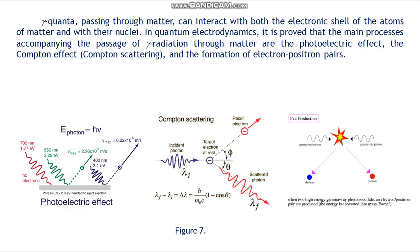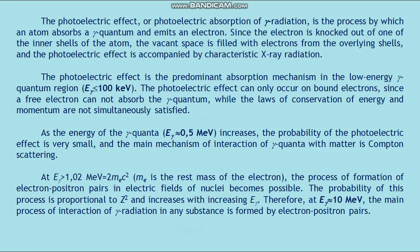Gamma quanta passing through matter can interact with both the electronic shell of the atoms and with their nuclei. In quantum electrodynamics it is proved that the main processes accompanying the passage of gamma radiation through matter are the photoelectric effect, the Compton effect (Compton scattering), and the formation of electron-positron pairs. The photoelectric effect, or photoelectric absorption, is a process in which an atom absorbs a gamma quantum and emits an electron. Since the electron is knocked out of one of the inner shells of the atom, the vacant space is filled with electrons from overlying shells, and the photoelectric effect is accompanied by characteristic x-ray radiation. The photoelectric effect is the predominant absorption mechanism in the low-energy gamma-quantum region.